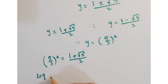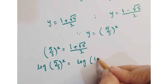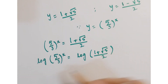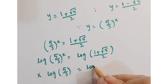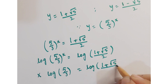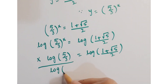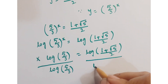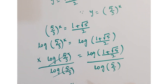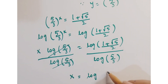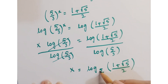Taking log on both sides and shifting x, we get x times log(5 upon 3) equals log of (1 plus root 5) upon 2. Dividing by log(5 upon 3) on both sides, x equals log base (5 upon 3) of (1 plus root 5) upon 2.